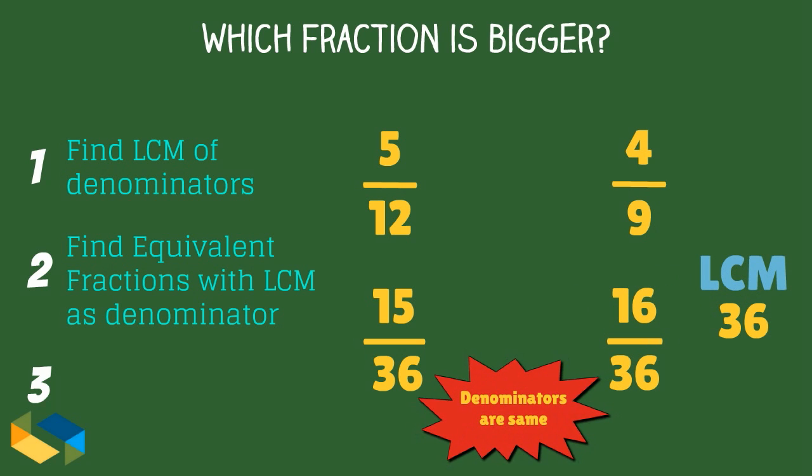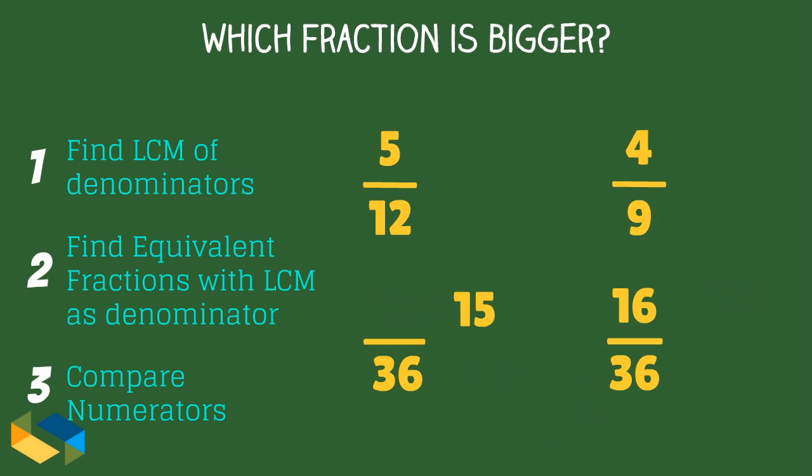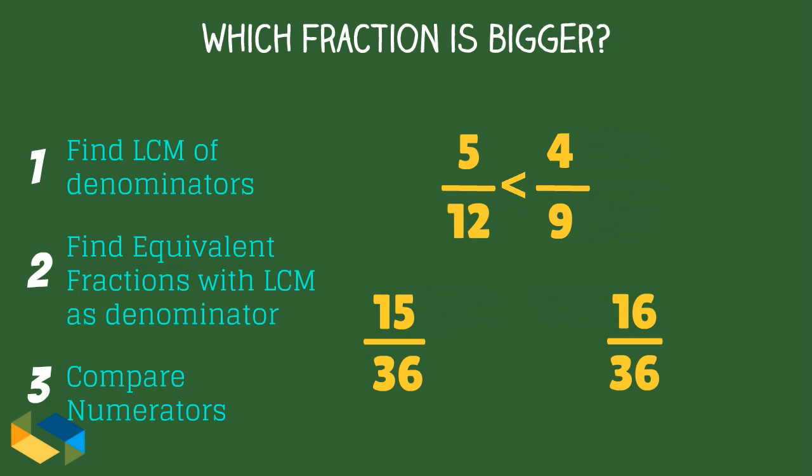Now that the denominators are same, we compare the numerators. 15 is less than 16. So, the fraction 5 upon 12 is also less than 4 upon 9.